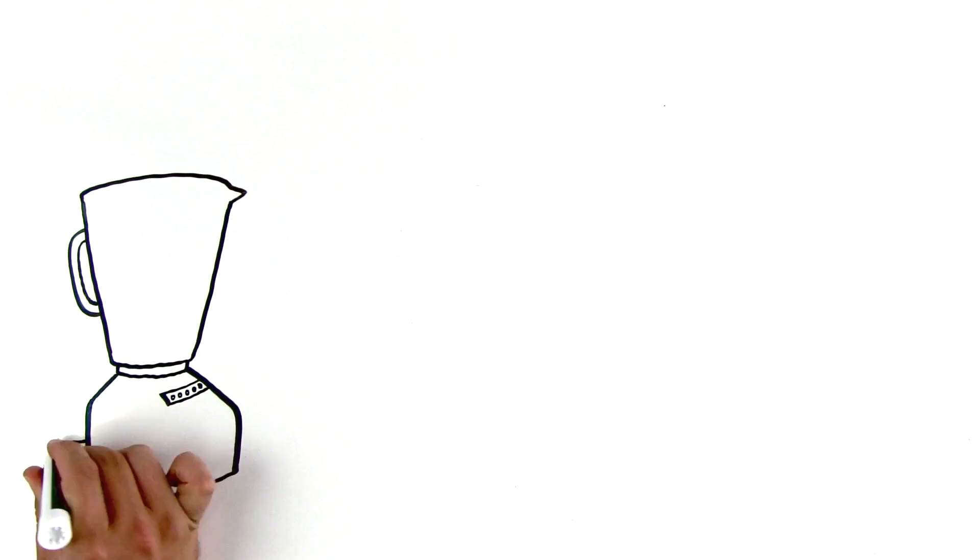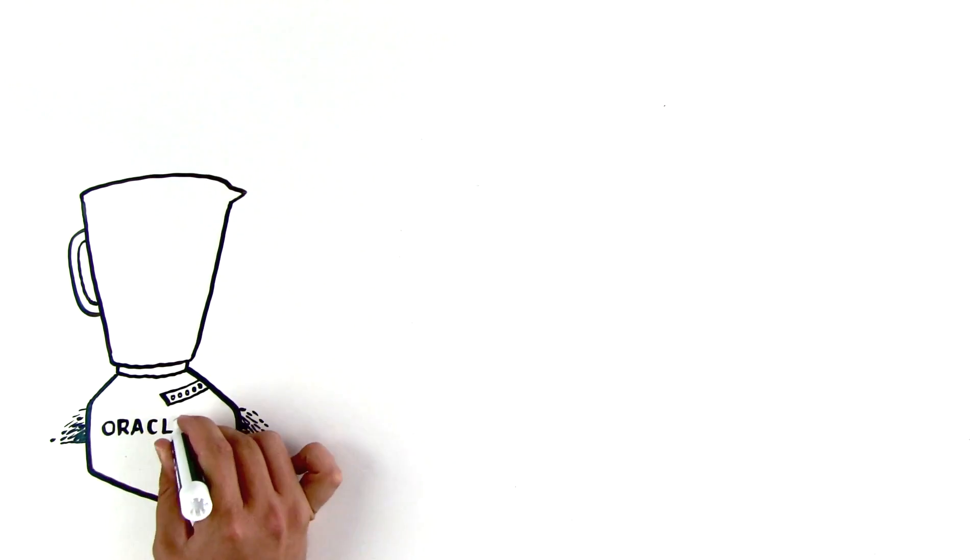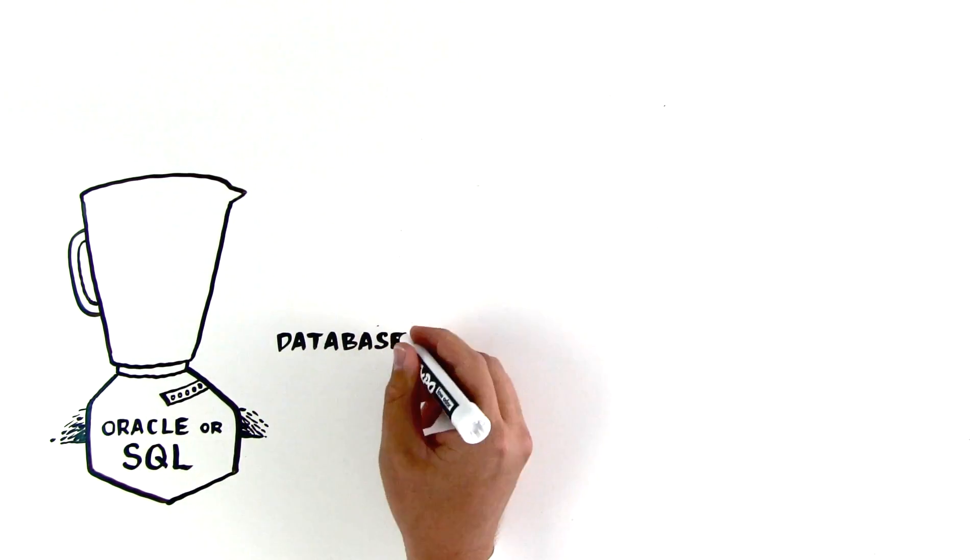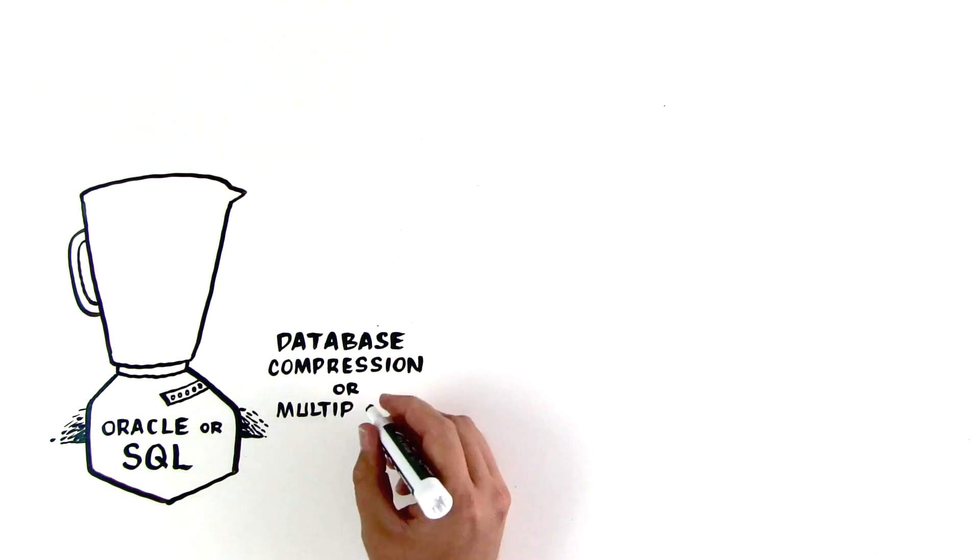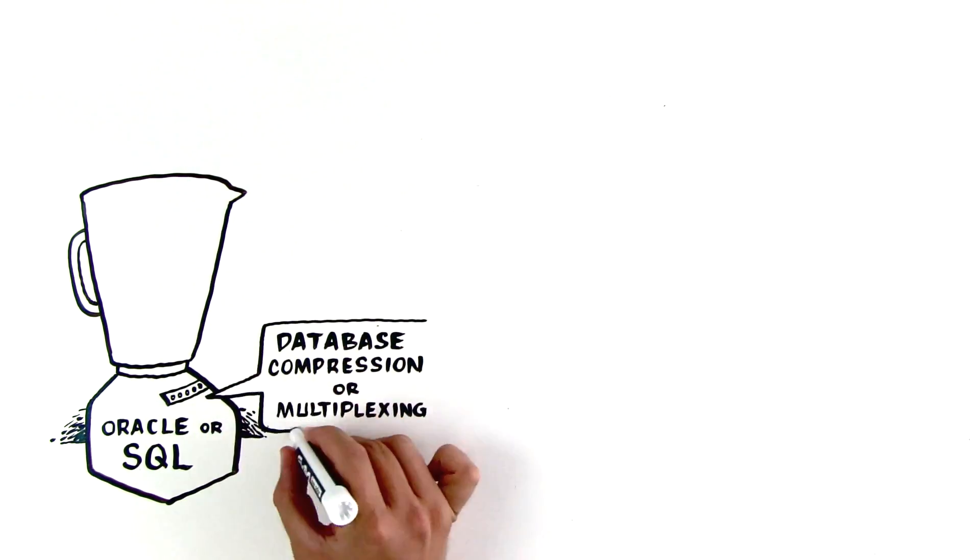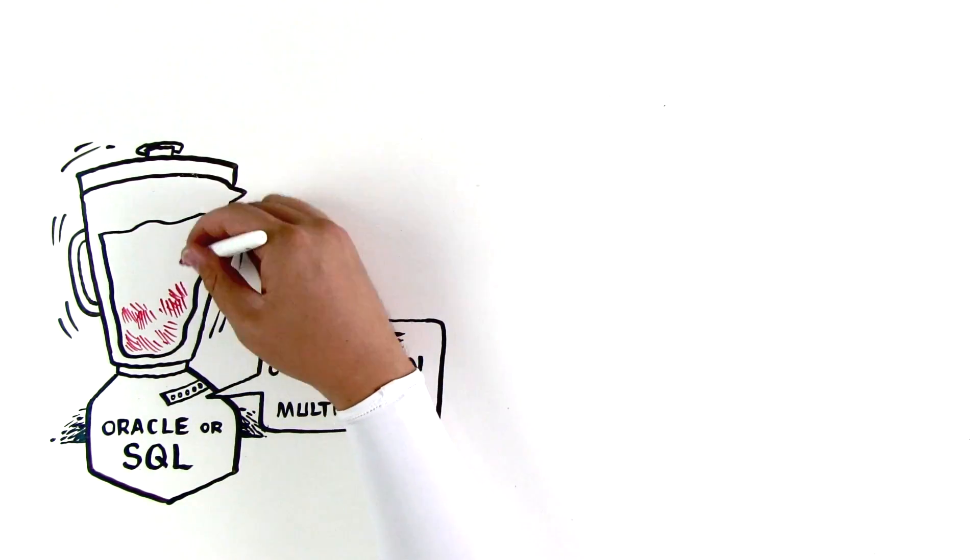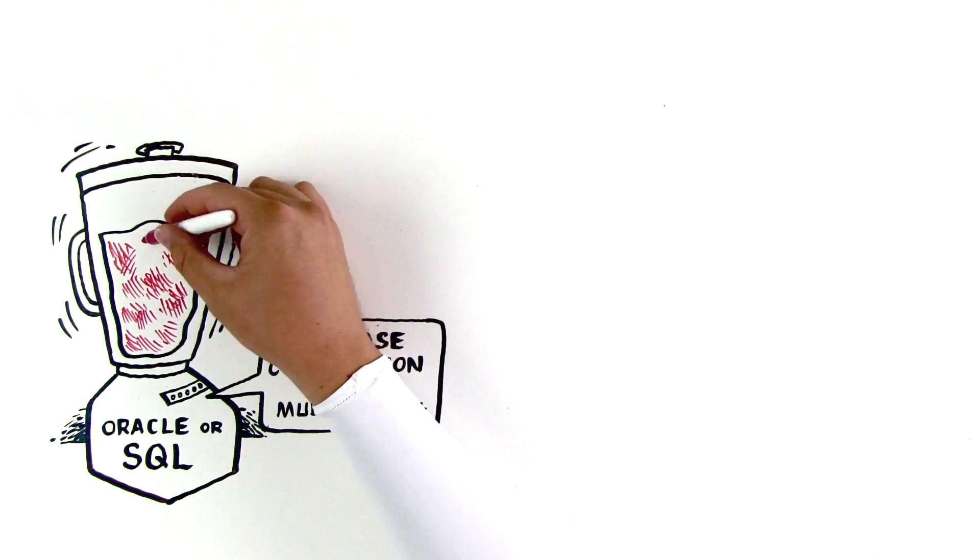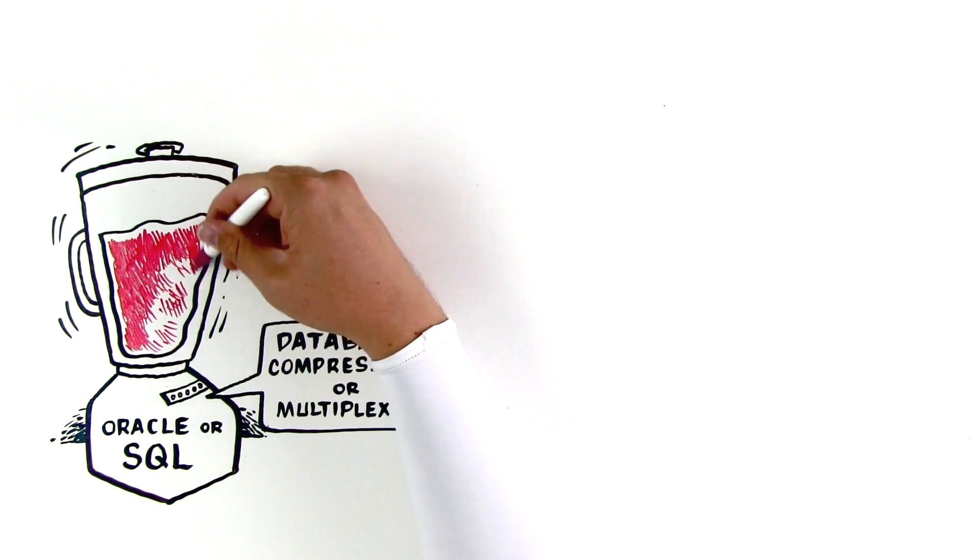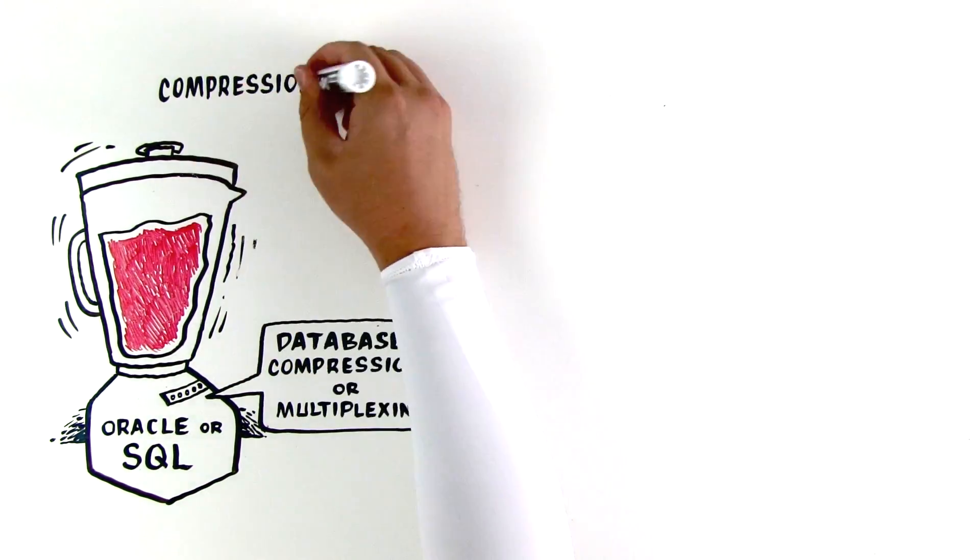First, is your data stored in a format like Oracle or SQL? If so, your DBA may have database compression or multiplexing turned on. That takes all the different fruits and turns them into a smoothie. Deduplication can't tell one piece of data from another and won't achieve any reduction. But compression can.